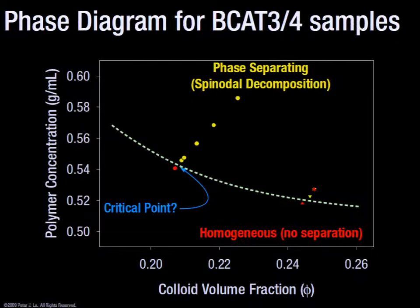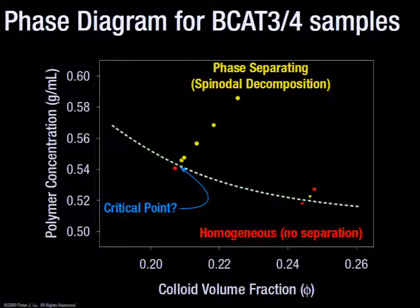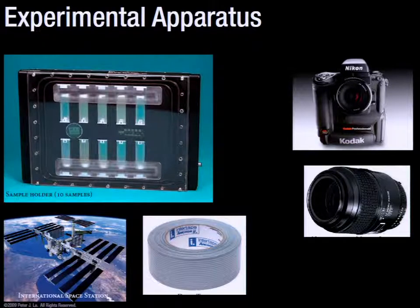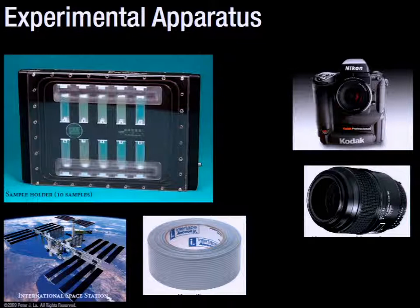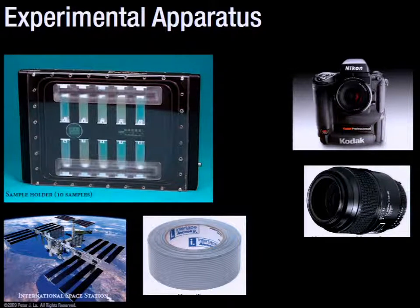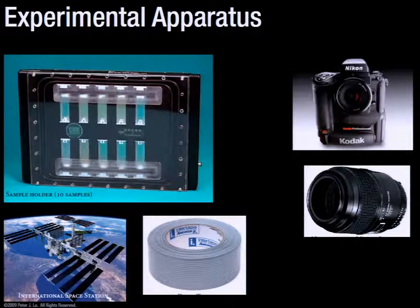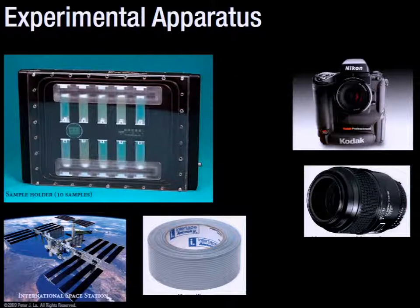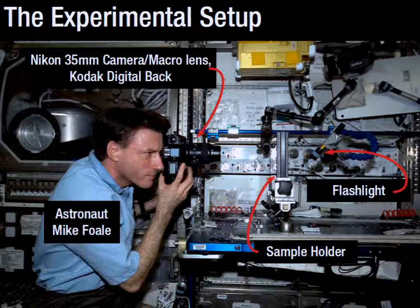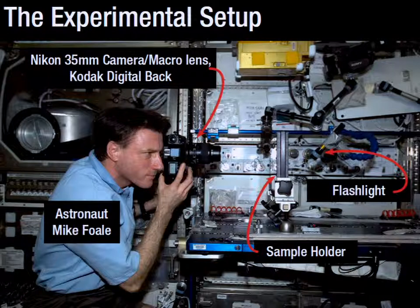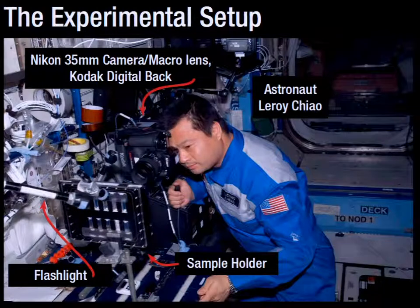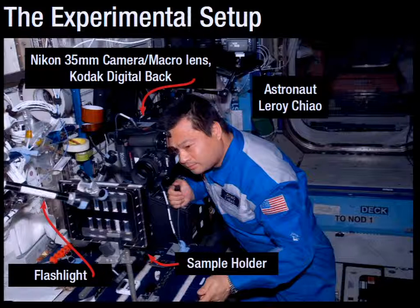We don't use an atomic liquid per se. We have these micron-sized particles of plexiglass called colloids. When you shine white light on it, it reflects in a bluish color. If there's more blue color, it's like the liquid and the gas is more like the black. On Earth, the blue, the denser part, just settles to the bottom and you don't really see very much of interest.